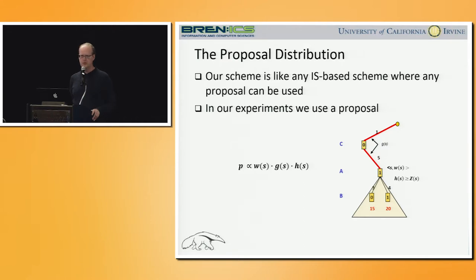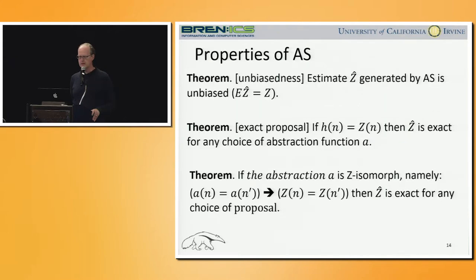Let me briefly mention the proposal distribution in our scheme. Just like any importance sampling based scheme, we can use any proposal — obviously the more accurate the proposal, the better the performance. In this paper we use a multiplicative proposal proportional to the weight of the node, times G (the cost so far), times H (the cost-to-go or the estimate of the conditioned sub-problem). With this, I will mention three major properties of the algorithm. First, the estimator is unbiased. Second, if the proposal is exact, then the estimate is also exact for any choice of the abstraction function. Third, if the abstraction function is exact, then the estimate is exact for any choice of proposal. Basically, if either the abstraction or the proposal is exact, this scheme gives an exact estimate.